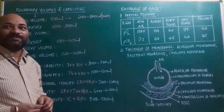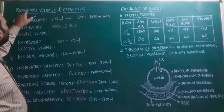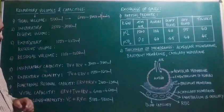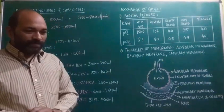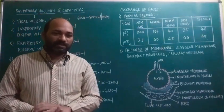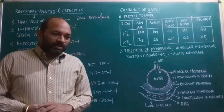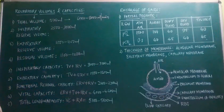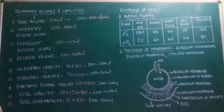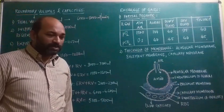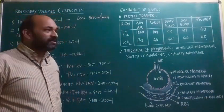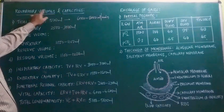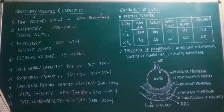The next topic in breathing and exchange of gases is respiratory volumes and respiratory capacities. A person generally breathes around 12 to 16 times per minute. In this topic, we have 4 different types of volumes and 5 different types of capacities. All this measuring is done by a device called a spirometer, also known as a respirometer.